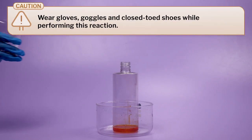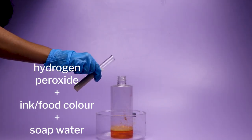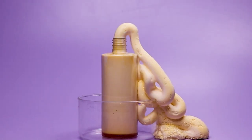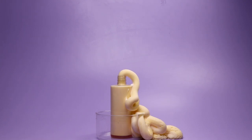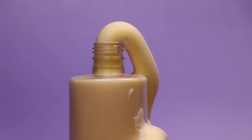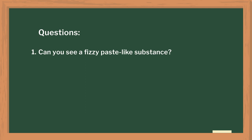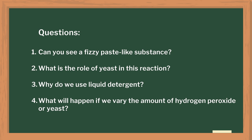For this activity, I added some hydrogen peroxide to a jar that had ink or food color and soap water in it. We used yeast solution as a catalyst. The toothpaste exploded, amusing the students who were keenly observing. You can also try doing this experiment by adding only water instead of yeast — this helps students understand the catalytic action of yeast. Questions you can ask: Why do we get this fizzy paste-like substance? What is the role of yeast? Why did we use liquid detergent? What happens if we vary the amount of hydrogen peroxide or yeast? Is the reaction exothermic?